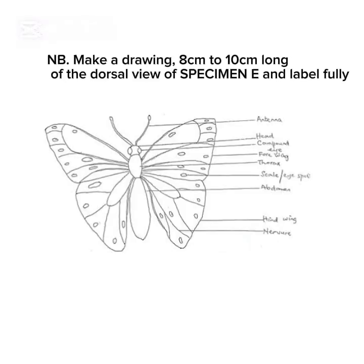Make a diagram 8 to 10 centimeters long of the dorsal view of Specimen E and label fully. You can see that Specimen E is a butterfly. When making a diagram or drawing any specimen, the labeling lines must not cross each other. The labels should be written horizontally. This is how you are supposed to label your specimen. I hope that is clear.